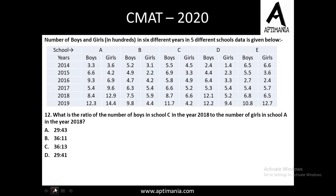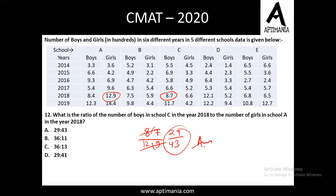Question number 12 is based on the same data: what is the ratio of the number of boys in school C in 2018 to the number of girls in school A in some year? We compute 8.7 to 12.9. Removing decimals gives 87 to 129, which simplifies to 29 to 43. The correct answer for question number 12 is 29 to 43, that is option A.